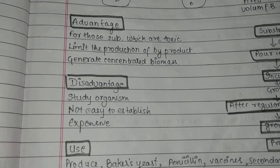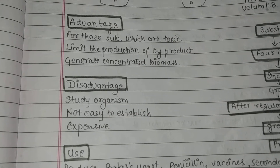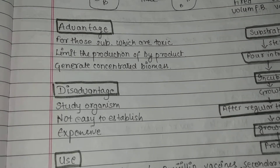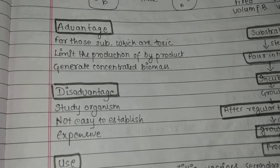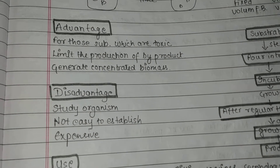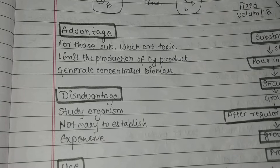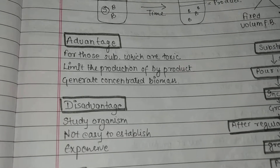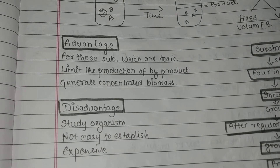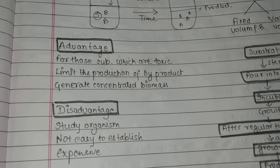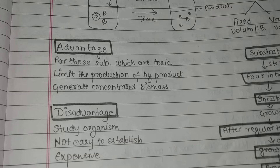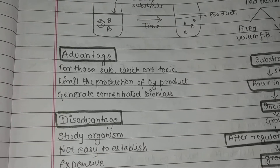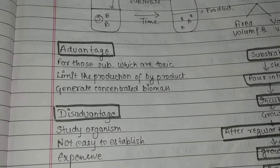Here are some advantages of fed-batch fermentation. When we want to produce microorganisms in high amounts and the substrate we use goes toxic, we use fed-batch fermentation. It limits the production of byproducts, as we are providing the substrate in little amounts at regular time intervals, so byproduct production is less and production of the desired microorganisms goes high. It also generates concentrated biomass.